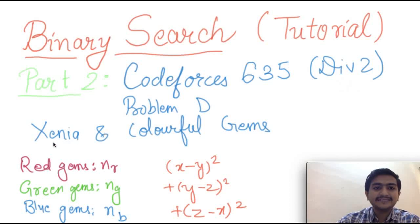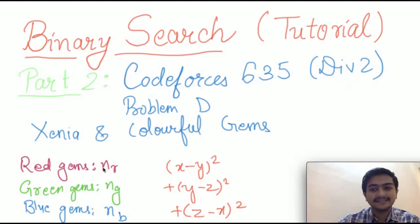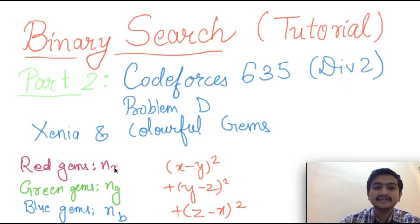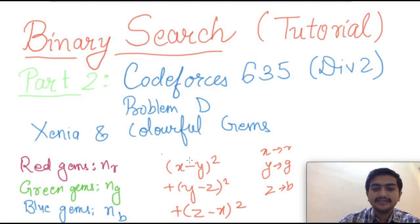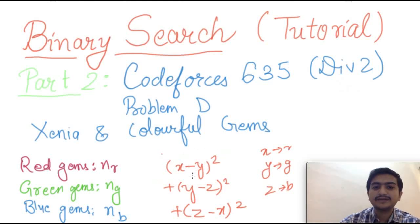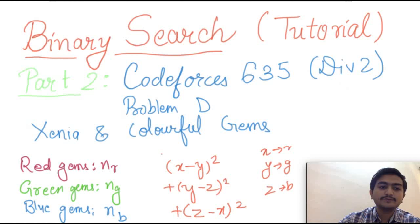In this question, Xenia is a girl who has red gems NR, green gems NG, and blue gems NB — these are the total numbers of gems she has. She wants to choose gem X from red, Y from green, and Z from blue such that (X−Y)² + (Y−Z)² + (Z−X)² is minimized. You have to minimize this value.